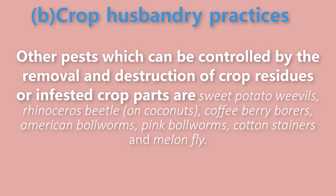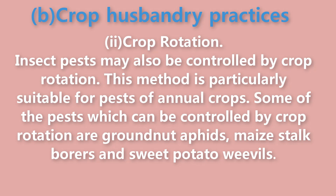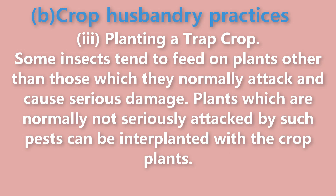Other pests which can be controlled by the removal and destruction of crop residues or infested crop parts include: sweet potato weevils, rhinoceros beetle on coconuts, coffee berry borers, American bollworms, pink bollworms, cotton stainers, and melon fly. Crop rotation: Insect pests may also be controlled by crop rotation. This method is particularly suitable for pests of annual crops. Some pests which can be controlled by crop rotation are groundnut aphids, maize stalk borers, and sweet potato weevils.